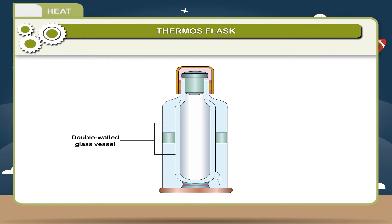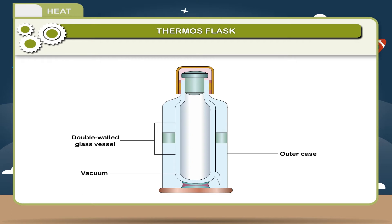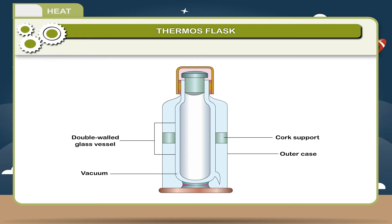Construction: The thermos flask consists of a double-walled glass vessel having a vacuum between the walls. The bottle is placed in a metallic case having non-conducting materials like cork or sponge in between. The outer surface of the inner wall and the inner surface of the outer wall are silvered.